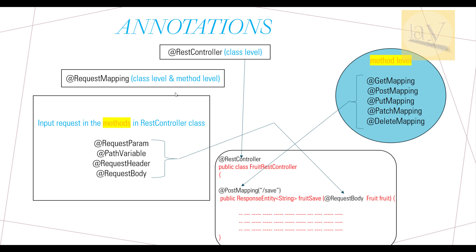At the method level, we have @GetMapping, @PostMapping, @PutMapping, @PatchMapping, and @DeleteMapping — the same as the HTTP methods we just discussed. These annotations are used on top of the method level. For example, @PostMapping and @GetMapping are placed on top of methods, as you can observe in the diagram.